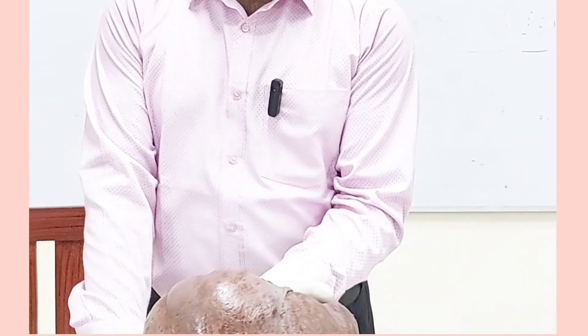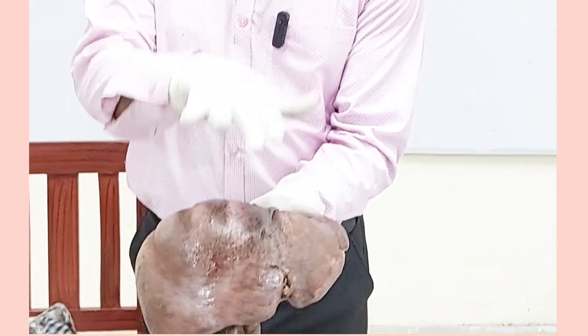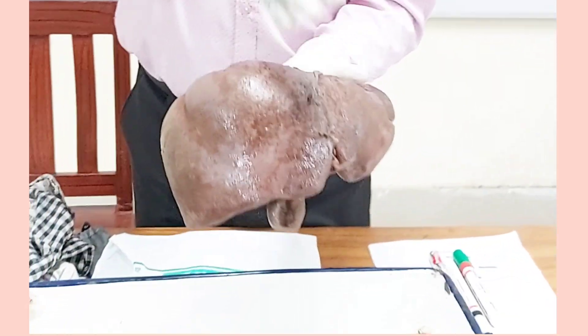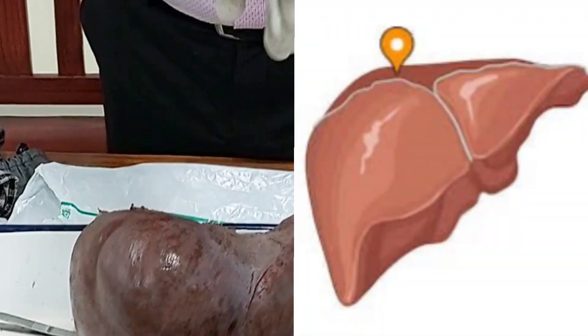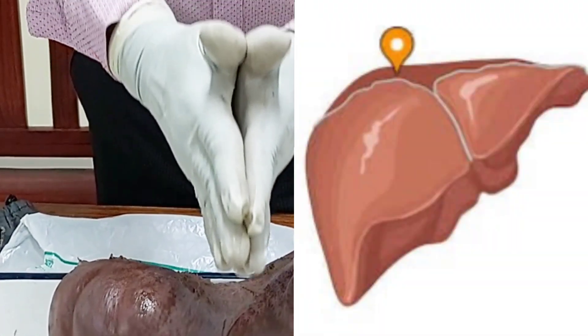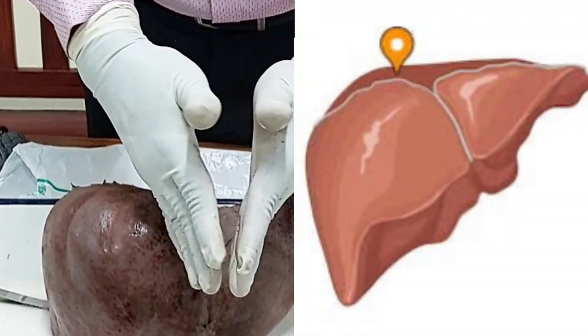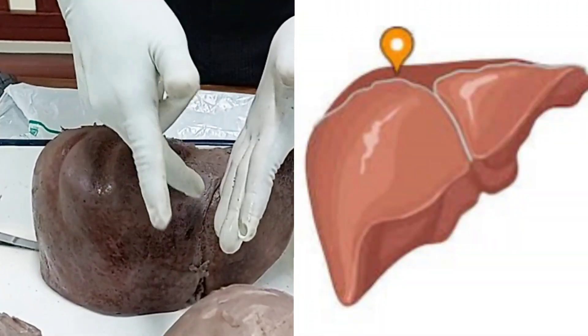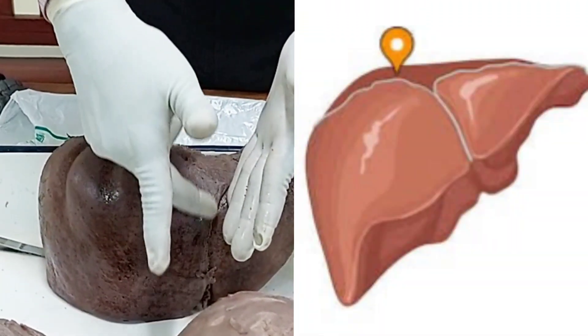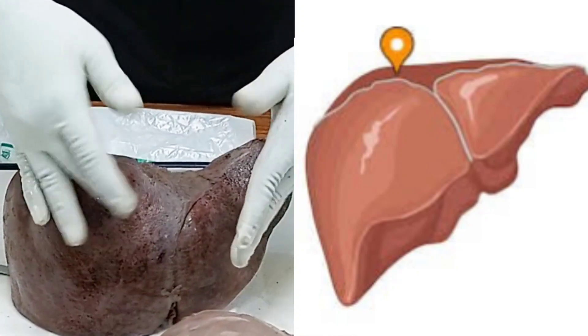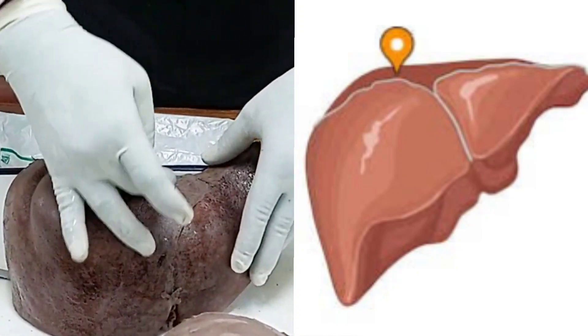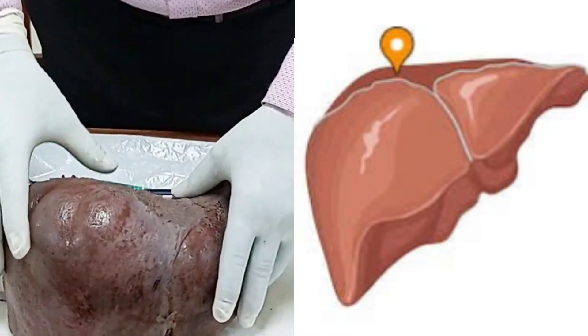Where the falciform ligament attaches and the two layers diverge, that part is a non-peritoneum area. So the middle part where the two layers diverge is also a non-peritoneum area.